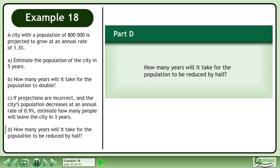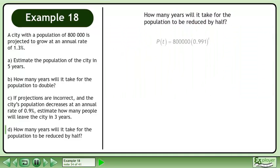Now we'll move on to Part D. How many years will it take for the population to be reduced by half? We write the function from Part C. P of t equals 800,000 times 0.991 raised to the power of t. Plug in 400,000 for the future population. This is half the initial population of 800,000.